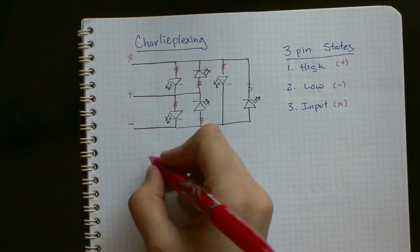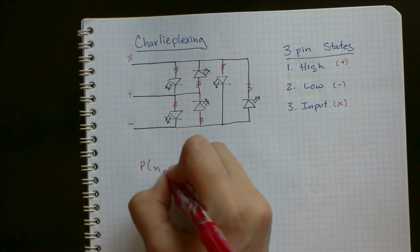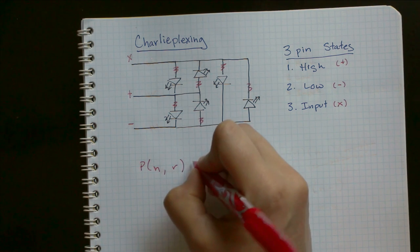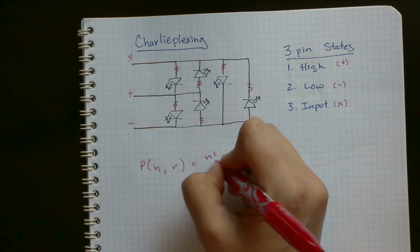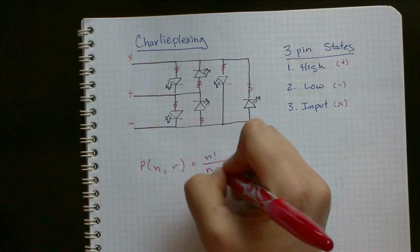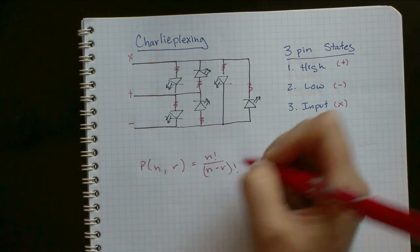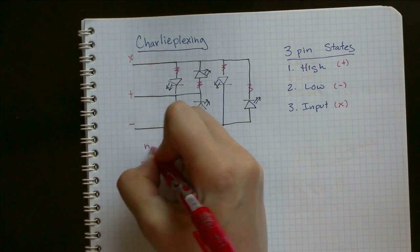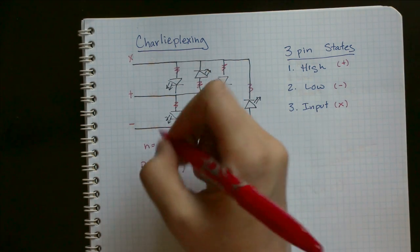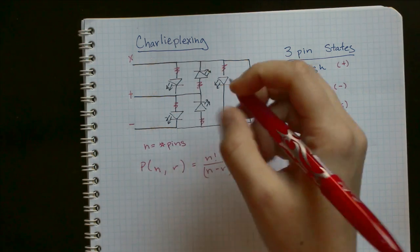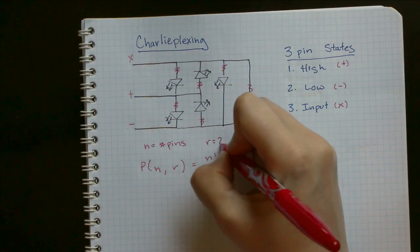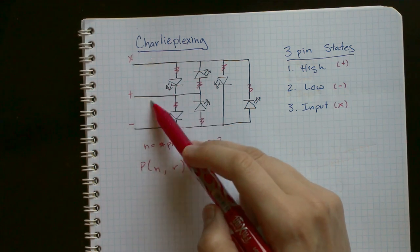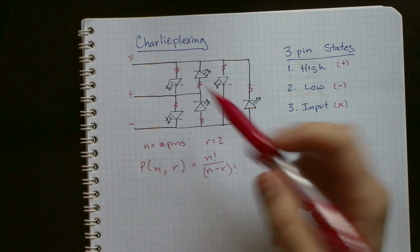So going back to Algebra 2, we have this formula. Where n is the number of pins, and r is 2 because we're taking them two at a time, we have to use two different pins to control one LED.